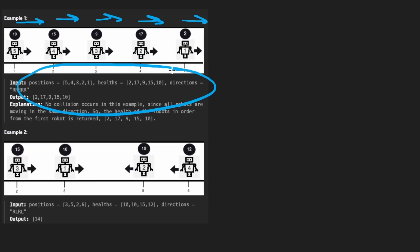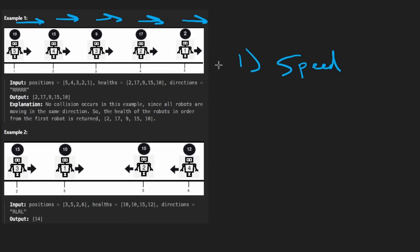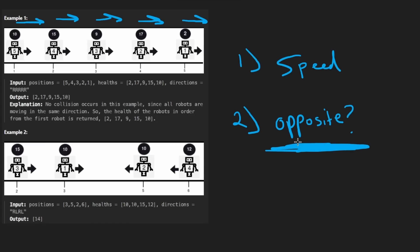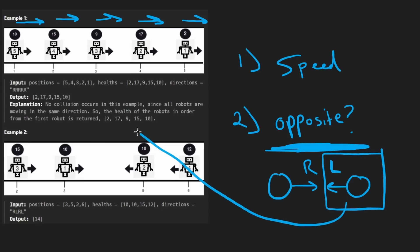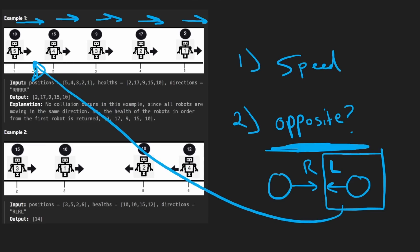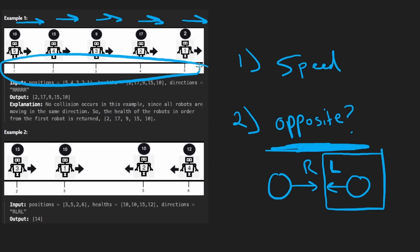Even though this is a simple example, it can still teach you a couple of things. One, the speed doesn't matter — we're not given the speed of any of the robots. They're moving in opposite directions. The only way they're going to collide is if the robot on the left is moving to the right and the next robot is moving to the left. When I say 'next robot,' what does that mean? The next robot in terms of chronological order based on the position of each robot from left to right.